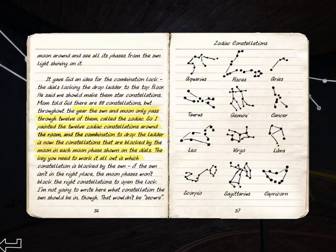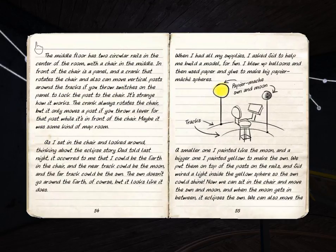The key you need to work out is which constellation is blocked by the sun. If the sun isn't in the right place, the moon phases won't bright. Let's go back. Get more information about the moon blocking the sun. How does that work?